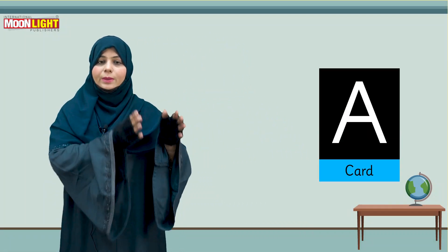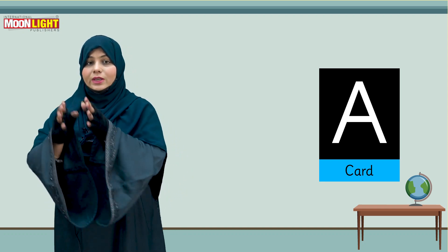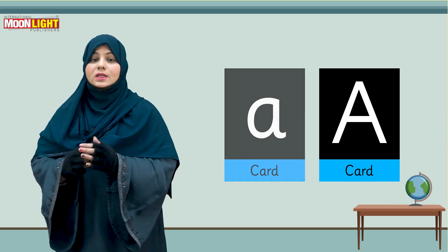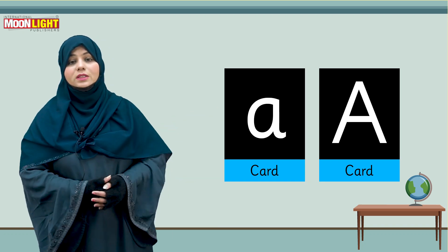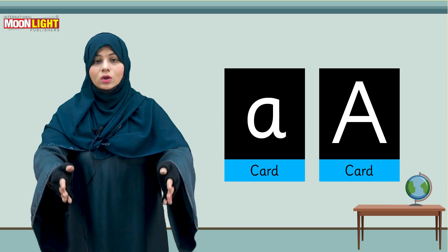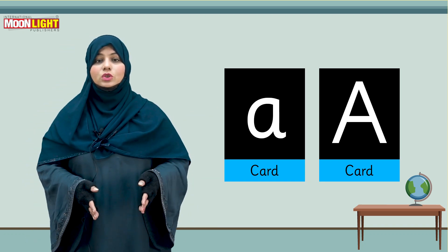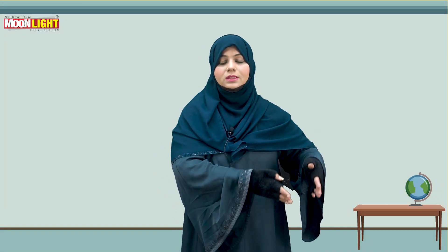After that, you can make an activity with students. Make some flashcards of capital letters and also some flashcards of small letters. Paste all the flashcards on the whiteboard, or spread them on the students' table. On one side, align all the capital alphabet, and on the other side align all the small alphabet.